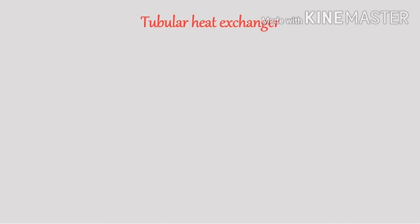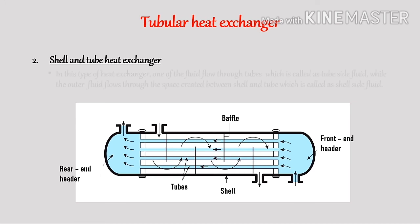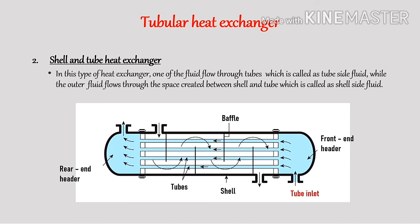The second type of tubular heat exchanger is the shell and tube heat exchanger. It consists of parallel tubes, a shell, baffles, and front and rear heads. The end of each tube is fixed in the tube sheet. The tubes provide the heat transfer area. One fluid flows through the tubes while the other fluid flows through the space between the tubes and the shell. Heat is transferred from the hot fluid to the cold fluid through the metal wall. The shell and tube heat exchanger is the most commonly used type in the chemical industry.